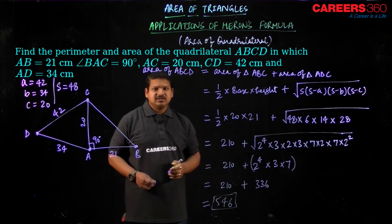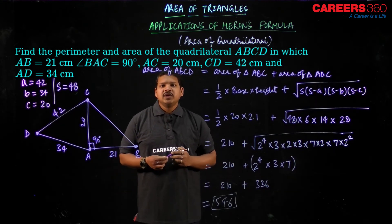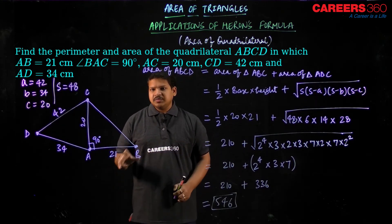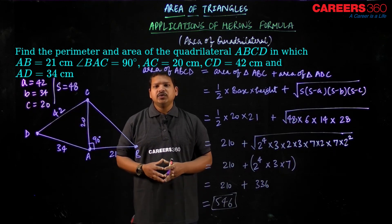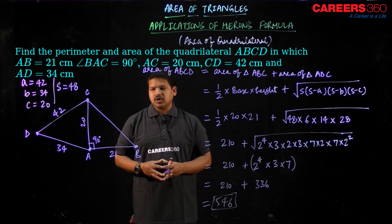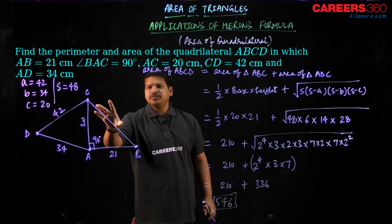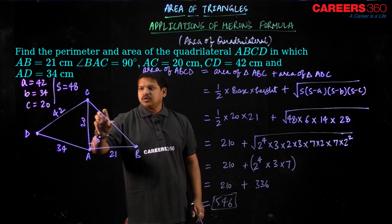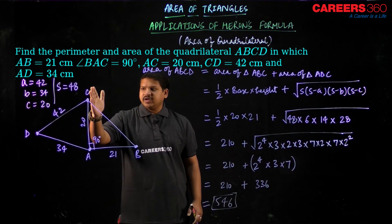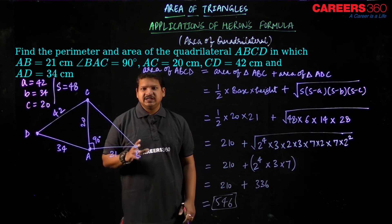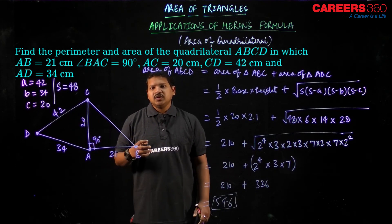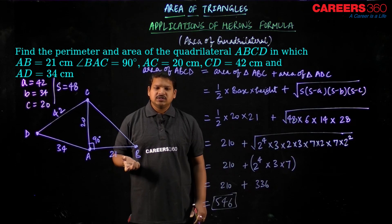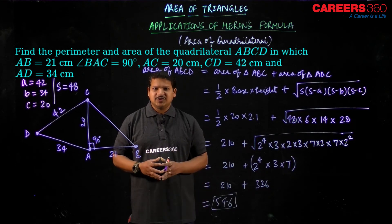I hope it makes sense to you and that is how the application of Heron's formula can be used in order to find out the area of the quadrilateral. What if I have been given the length of BC then also I have divided into 2 triangles and then calculate the area separately of those 2 triangles. I hope it makes complete sense to you. Thank you so much.